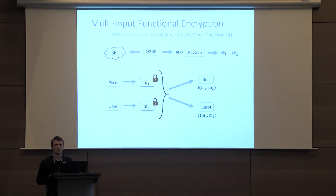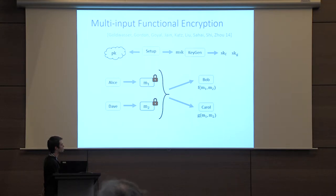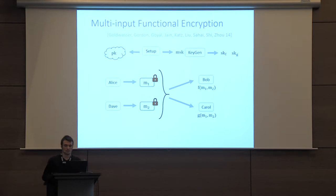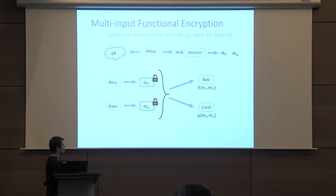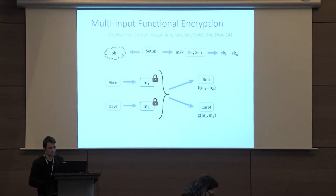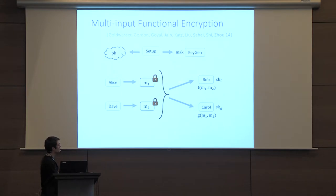The way this is implemented is as follows. There is a trusted setup that generates a public key used to encrypt messages for each slot, and a master secret key used by a key generation algorithm to generate keys for particular functions. Each key is different for every function. The key generation algorithm takes the master secret key and the description of a function F as input, and produces a secret key for F. If a user gets a secret key for F, they can extract from the ciphertexts the function F of M1 and M2, and nothing more.